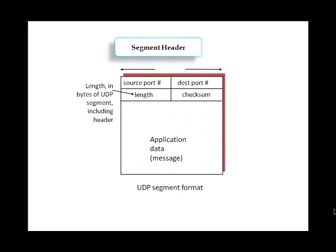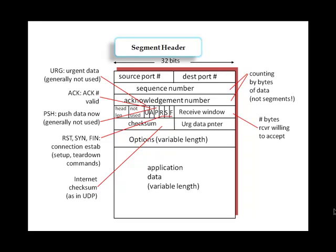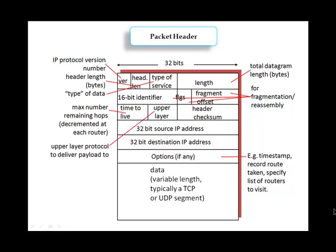The segment header can be of two types. The UDP segment format has the source port number, destination port number, length, and checksum. The TCP segment format includes additional information such as sequence number, acknowledgement, and window size for reliable transportation. The packet header contains information such as time-to-live, the type of data, and the 32-bit source and destination IP addresses.